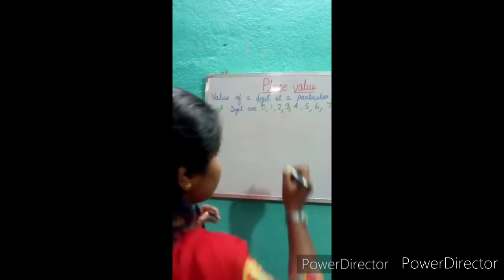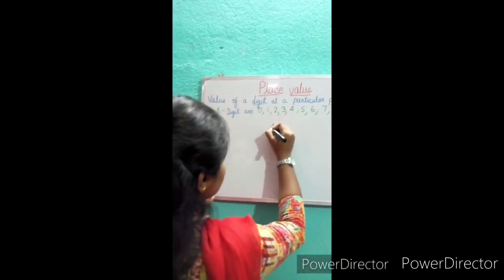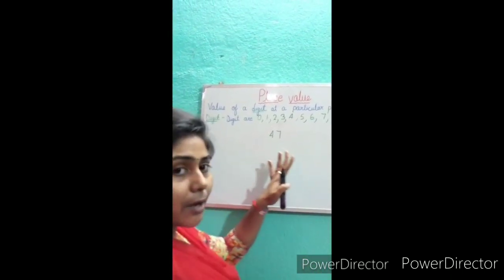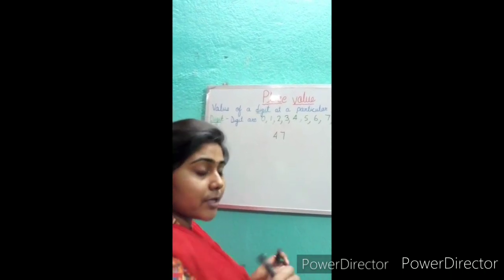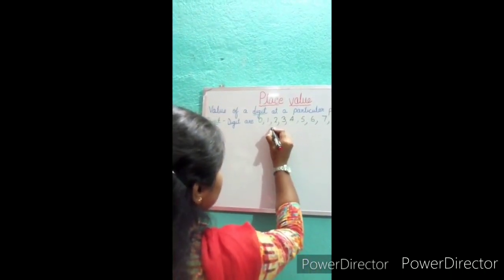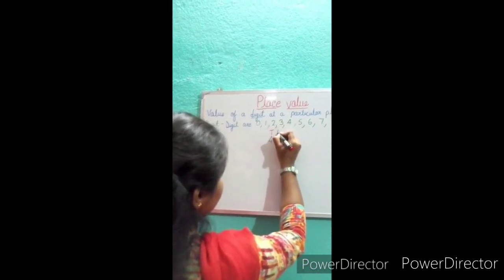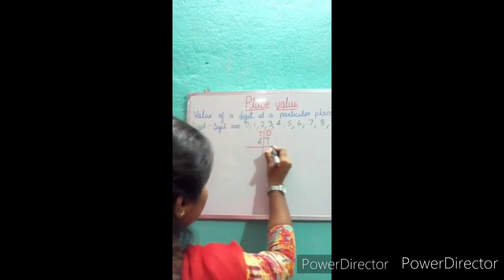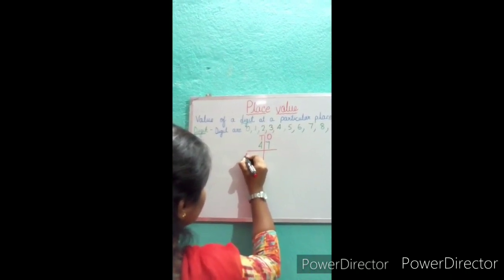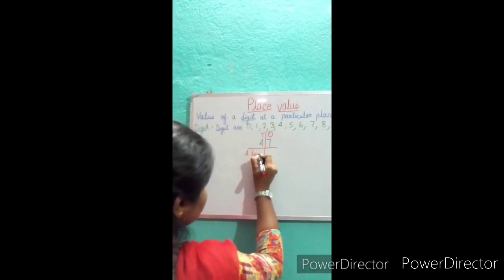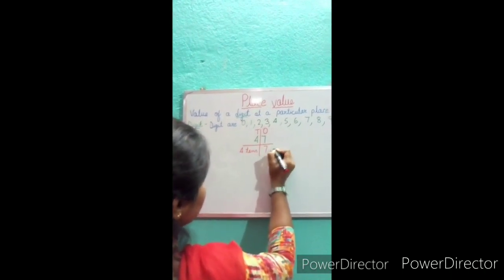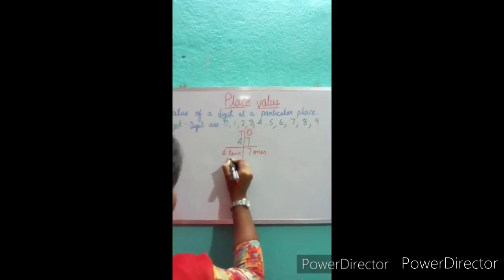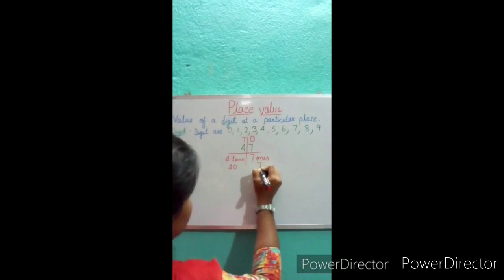So if I write the number 47, you have to tell me how many tens and how many ones are there. For that, first we write the places — tens and ones. So we write 4 tens and 7 ones. 4 tens we can write as 40, and 7 ones we can write as 7.